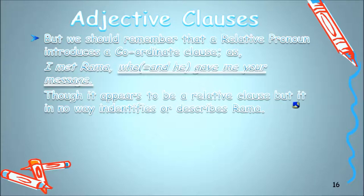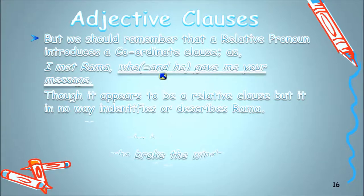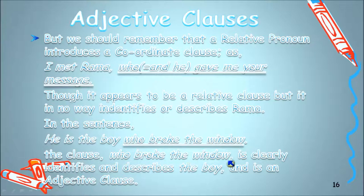Though it appears to be a relative clause, 'who gave me your message' in no way identifies or describes Rama — it is simply a continuation of the story, making it a coordinate clause in a compound sentence. By contrast, in 'He is the boy who broke the window,' the clause 'who broke the window' clearly identifies and describes 'the boy,' making it a genuine adjective clause.